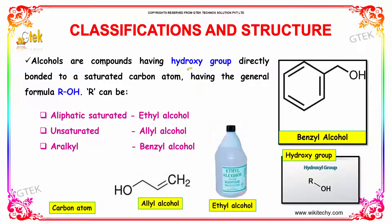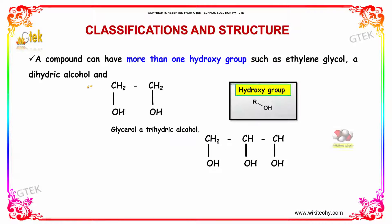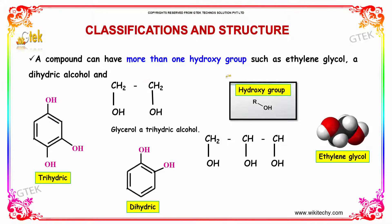Alcohols are compounds having a hydroxy group directly bonded to a saturated carbon atom, having the general formula ROH. R can be any aliphatic, saturated, unsaturated, or aryl compound. A compound can have more than one hydroxy group, such as ethylene glycol, a dihydric alcohol, and glycerol. In this formula, we can see that two hydroxyl groups are present.